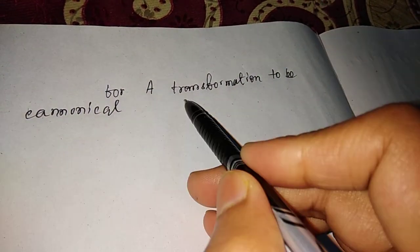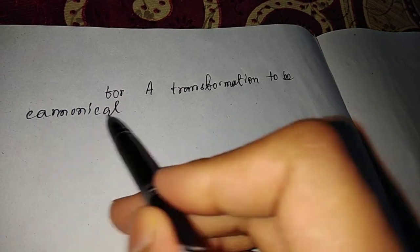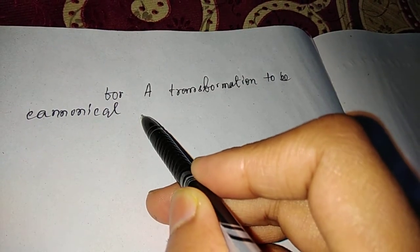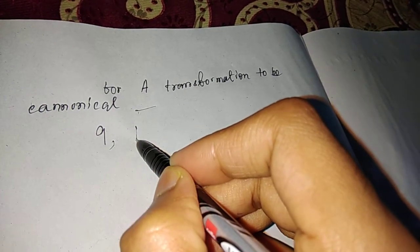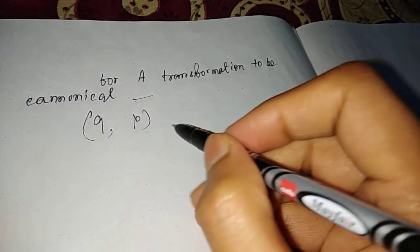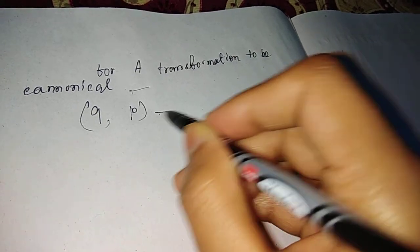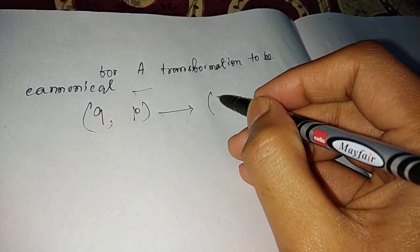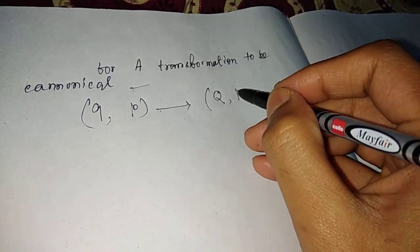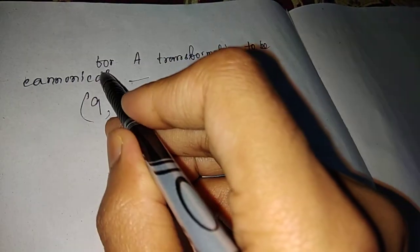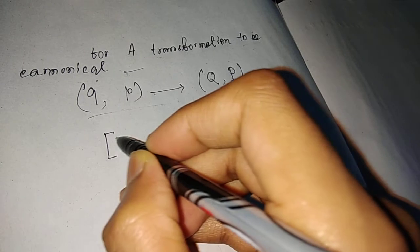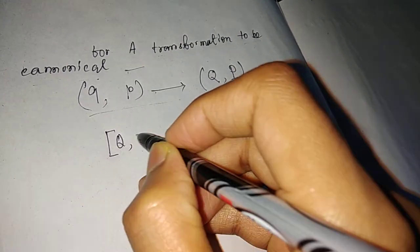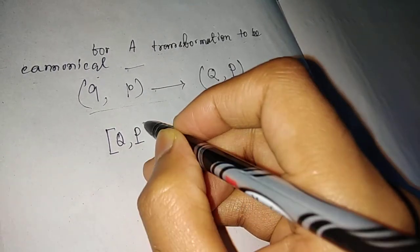For a transformation to be canonical, consider old coordinates q and p and new coordinates capital Q and capital P. For this transformation to be canonical, the condition is that the Poisson bracket of Q and P is 1.